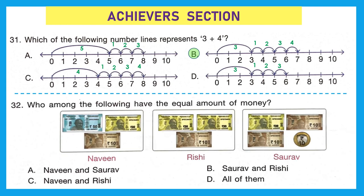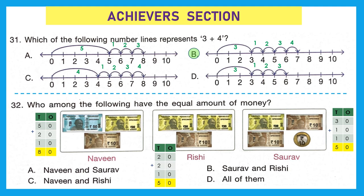Question 32: 'Who among the following have the equal amount of money?' Naveen has a 50, 20, and 10 rupee note — total 80 rupees. Rishi has two 20 rupee notes and one 10 rupee note — total 50 rupees. We can clearly see that Rishi and Saurav have the equal amount of money. The correct option is option B.